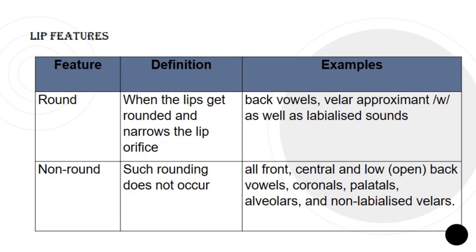For lip features, we have round and non-round. It is round when the lips get rounded and narrows the lip orifice — examples are back vowels, velar approximant w, as well as labialized sounds. Non-round: such rounding does not occur in this case, and examples are all front, central, and low open back vowels, coronals, palatals, alveolars, and non-labialized velars.